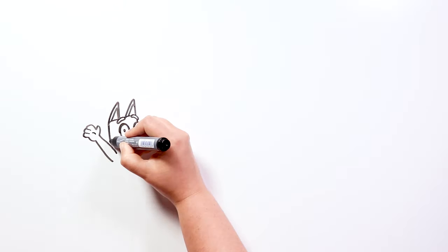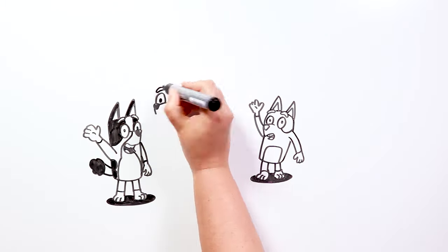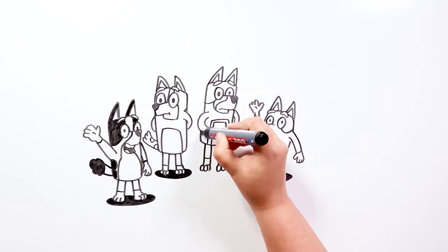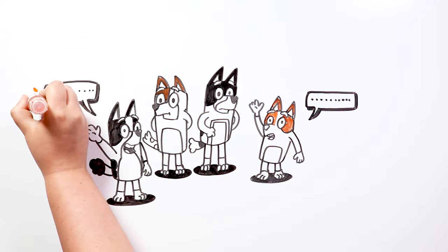Many years ago, in a small town surrounded by thick forests, lived four dogs: Bluey, her younger sister Bingo, her mother Chili, and her father Bandit. They were very special dogs because they could talk, which made them unique.